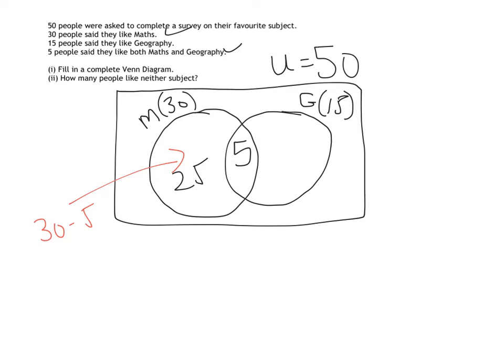On to the other side then, we want to think again our geography circle should add up to 15 in total, so I need to take away those 5 people who said they liked geography and maths. So 15 minus 5 is going to give me 10.